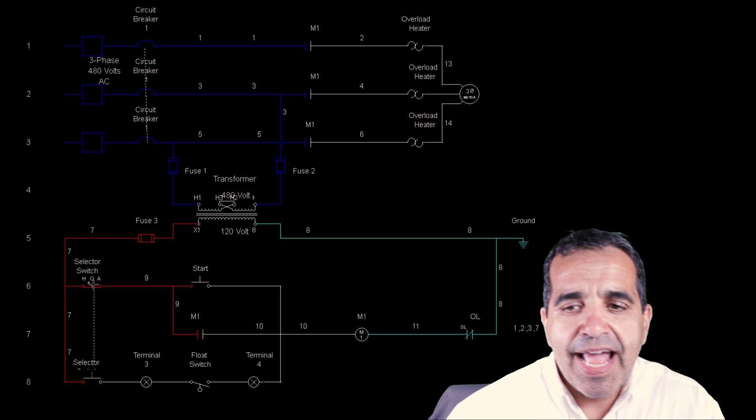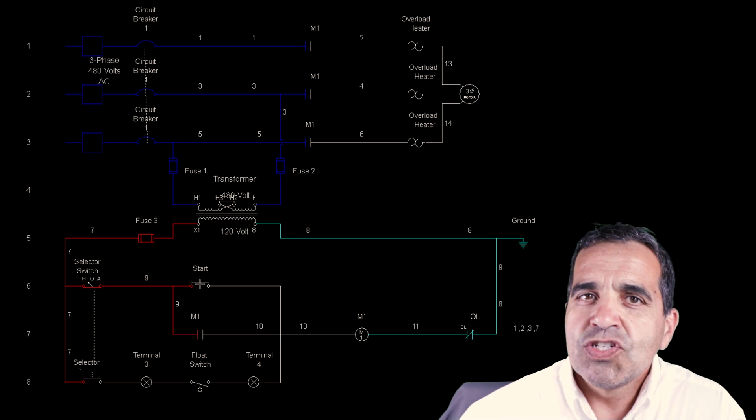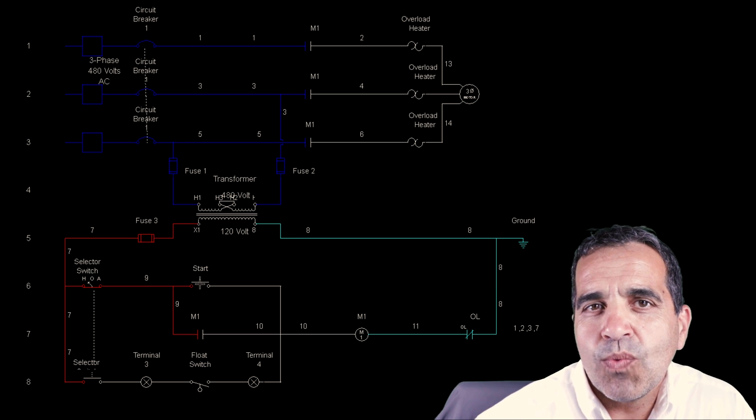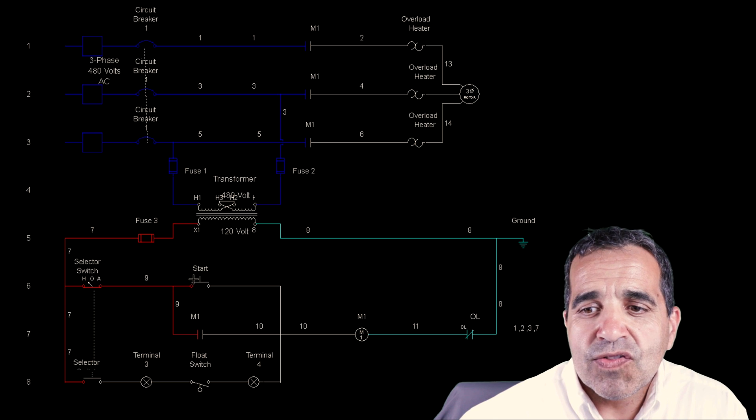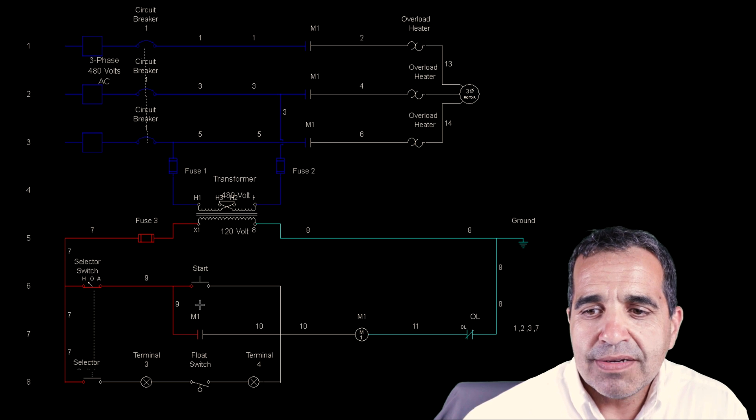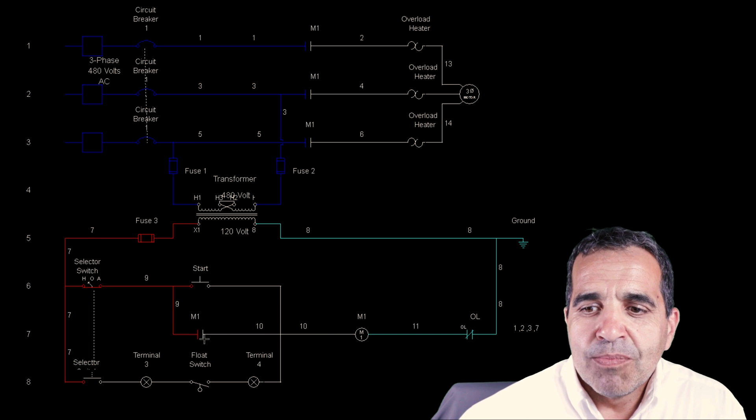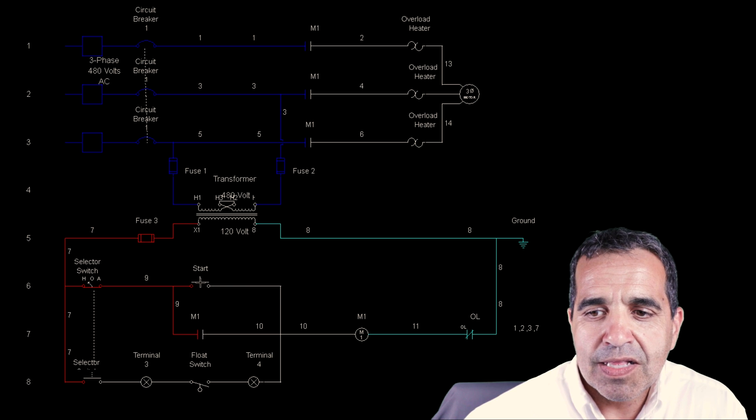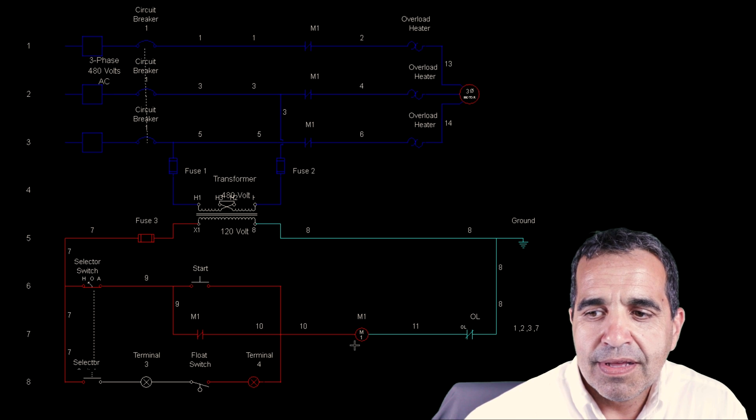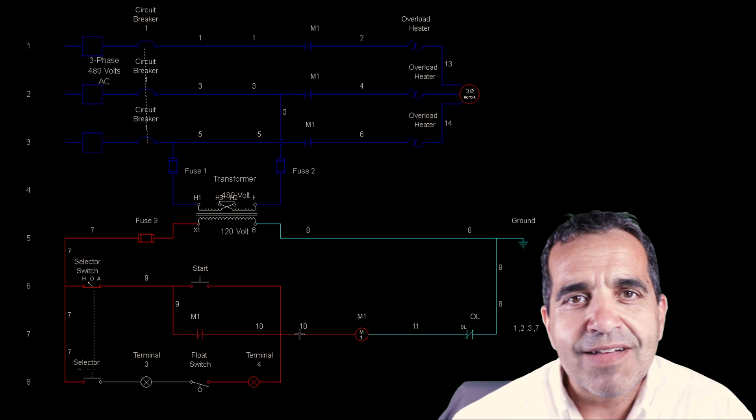Alright, so here in hand, hand sends power directly to our start button, just like in the three-wire start-stop. When we hit start the coil will energize, the motor auxiliary contact will close, and it will keep itself on. Let's try that out. Hit start. The coil energized. The auxiliary closed, bypassing the start button, and it kept itself on.